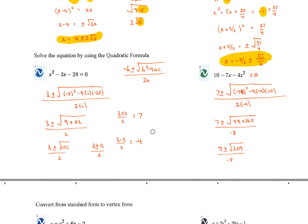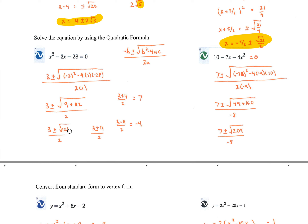Solve the equation with the quadratic formula. Set equal to 0, order as x squared, then x terms, then the constant, giving a, b, and c. Plug into the quadratic formula. The opposite of negative 3 is 3; negative 3 squared minus 4ac — 4 times 1 times 28 — the negative 28 makes it plus 112. Negative 3 squared is 9, which is always positive. The square root of 121 is 11, so we get 3 plus 11 over 2 and 3 minus 11 over 2 as the two solutions.